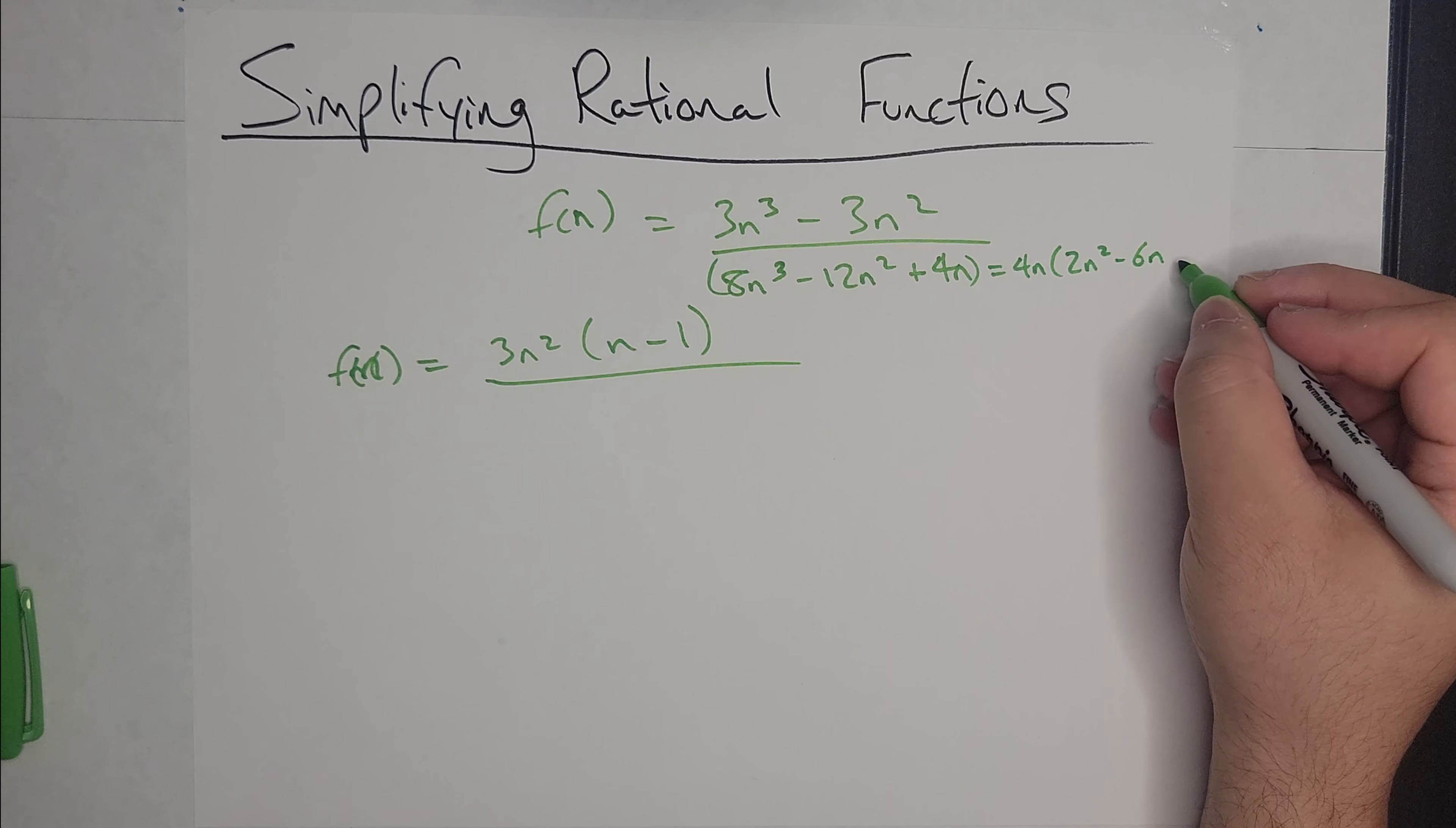So now I see something clearly in this function that I have an n - 1 in the numerator and an n - 1 in the denominator. These will cancel out, and I'm left with 3n² over 4n times 2n - 1. And there we have it, let's try doing another one.